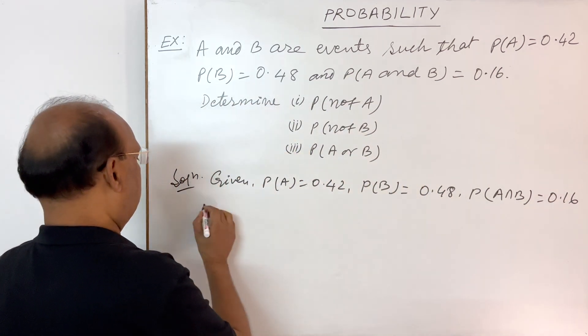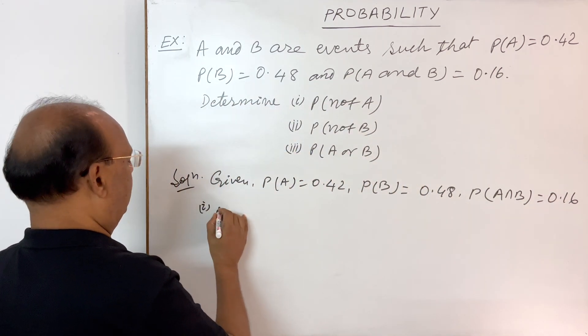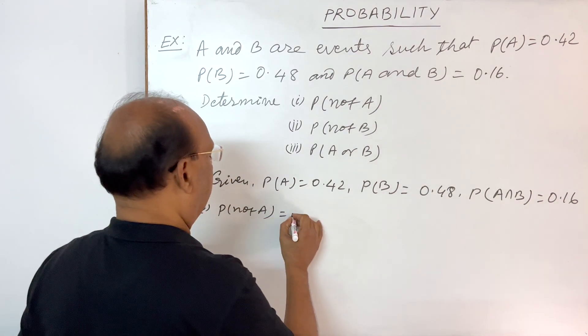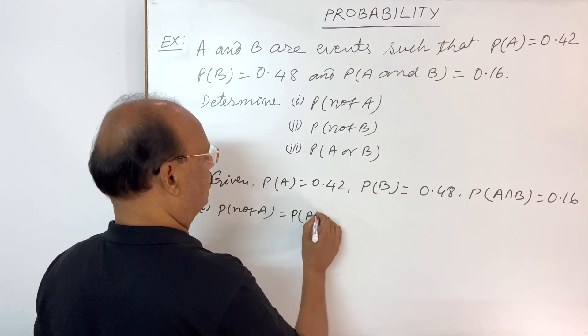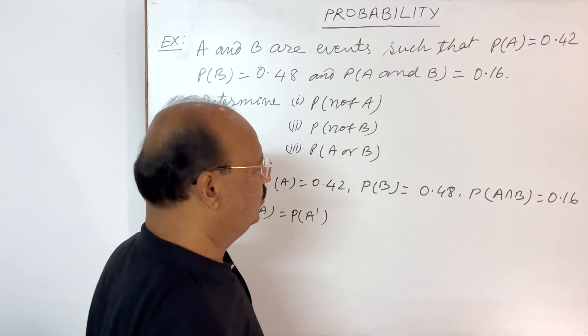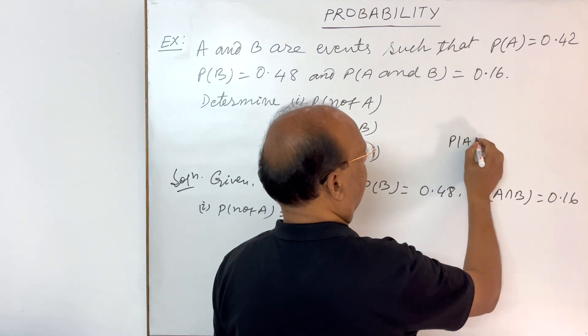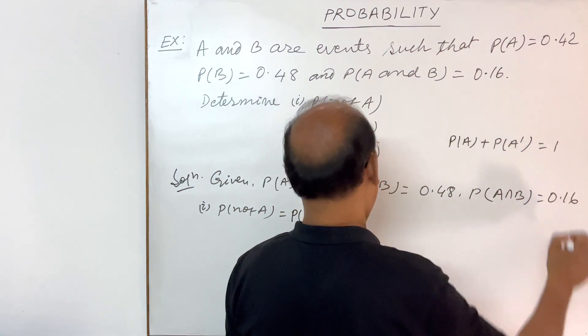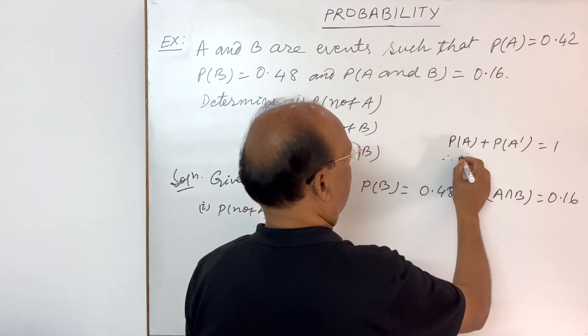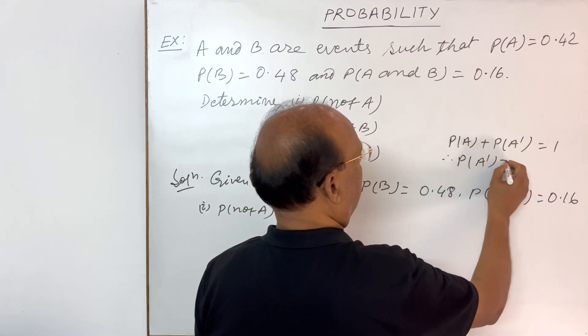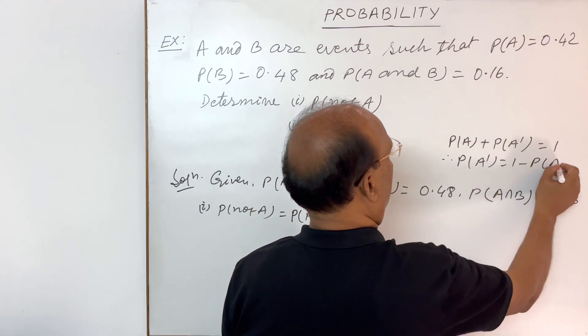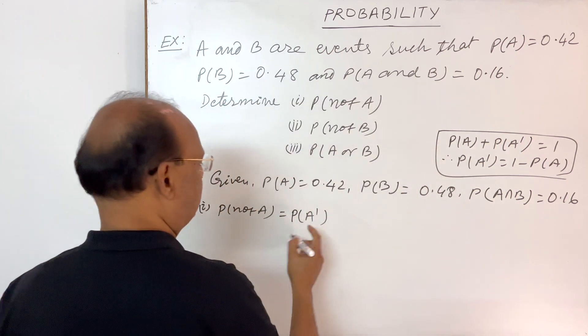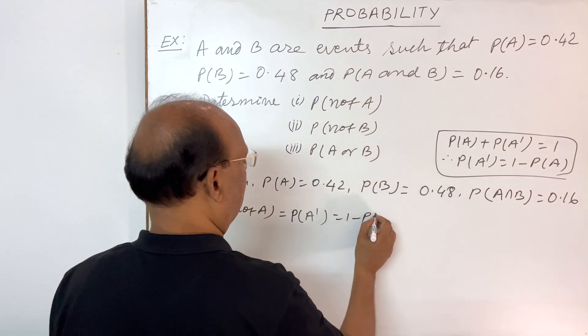Let us solve one by one. First question here, we have to find out probability of not A. And here we will use a formula that probability of A plus probability of not A is equal to 1. So therefore, probability of not A is equal to 1 minus probability of A. Very simple and important formula.